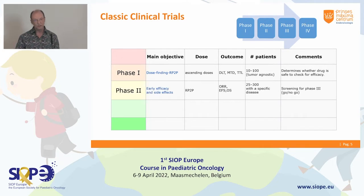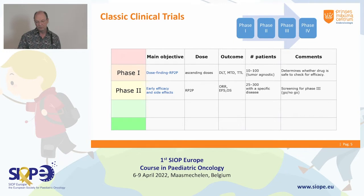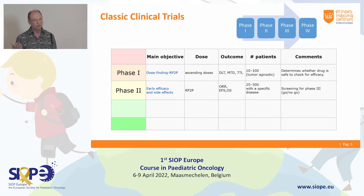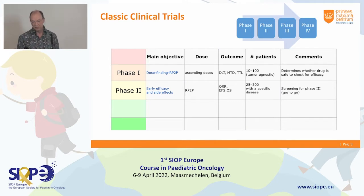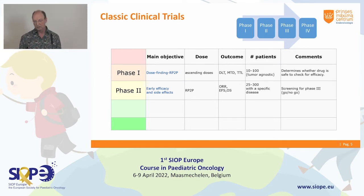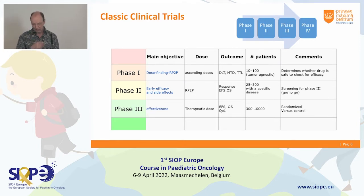Then we continue with phase two, looking at early signs of efficacy and side effects. The dose used is the recommended phase two dose. Endpoints are usually response rate, EFS, or overall survival and event-free survival. Slightly bigger numbers are used to get more confidence about efficacy. Phase two is really a go/no-go decision for continuing drug development — it's a threshold for going to larger numbers.